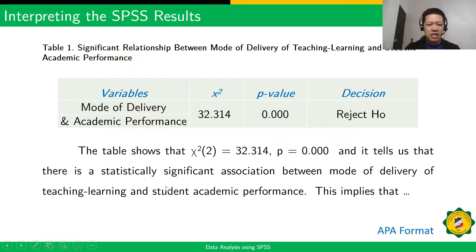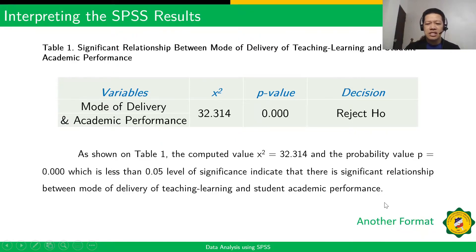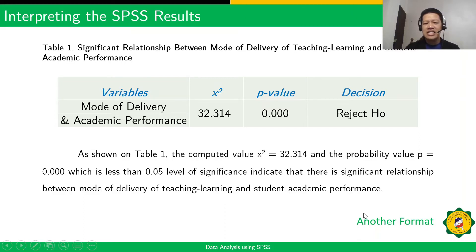Using APA format, you write: the table shows the computed chi-square value and probability value, indicating there is a statistically significant association between mode of delivery of teaching learning and student academic performance. Another format: as shown in Table 1, the computed value and probability value, which is less than 0.05 level of significance, indicate that there is a significant relationship between the mode of delivery of teaching learning and student academic performance.